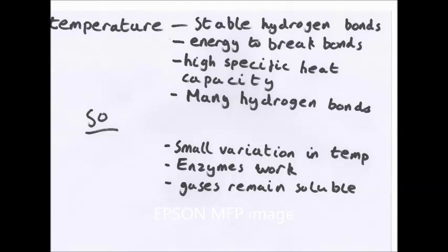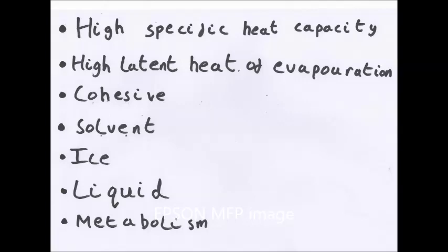Finally, temperature. There are many stable hydrogen bonds. Energy is required to break the bonds. This is high specific heat capacity, meaning a lot of energy is needed to increase the temperature of water by one degrees. So, this provides a small variation in temperature and allows enzymes to work. Enzymes work in a very specific temperature range. So, if you keep the temperature constant, it means that the organisms won't lose their enzymes and die.